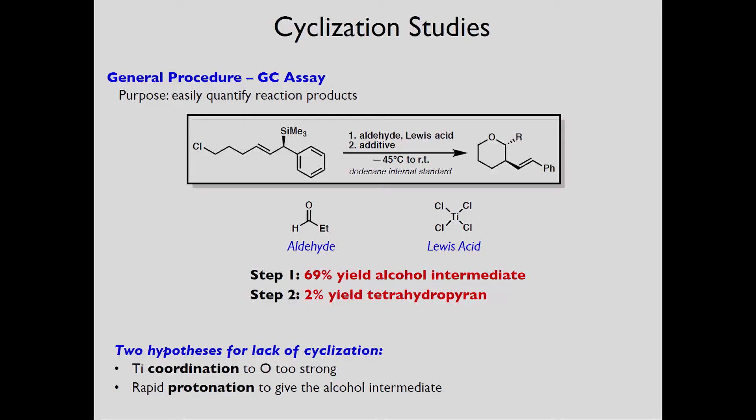We had two hypotheses for why cyclization was not occurring. The first was that the titanium in the Lewis acid was coordinating too strongly to the oxygen in the alkoxide intermediate. Alternatively we believed that the alkoxide was actually protonating too quickly and forming the alcohol and therefore cyclization could not occur.